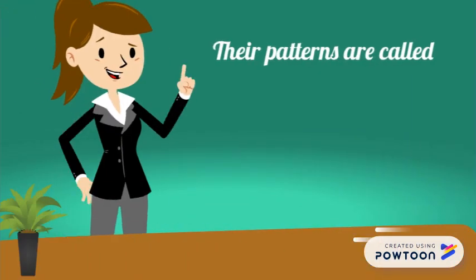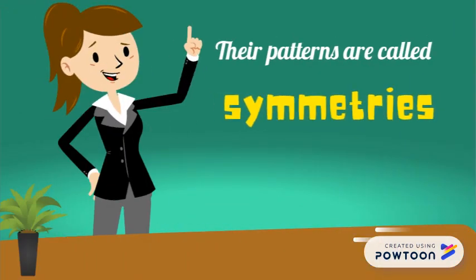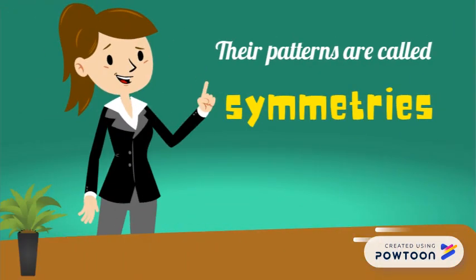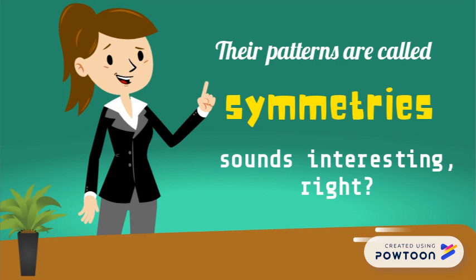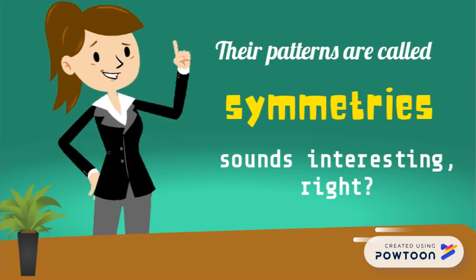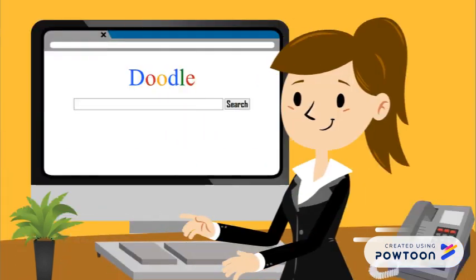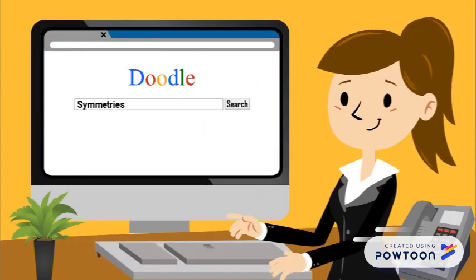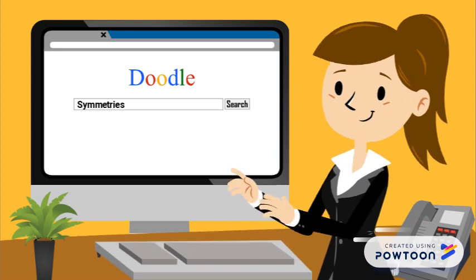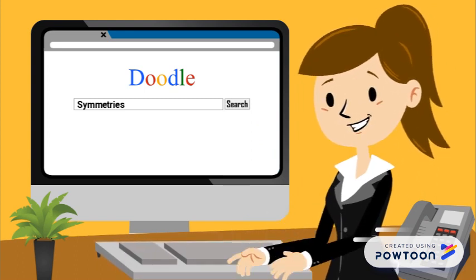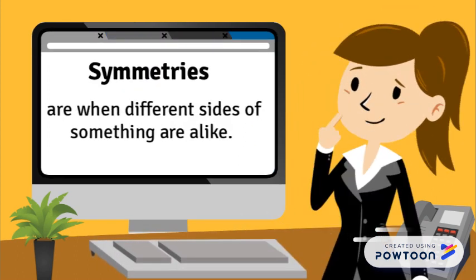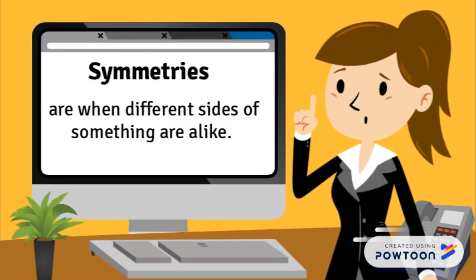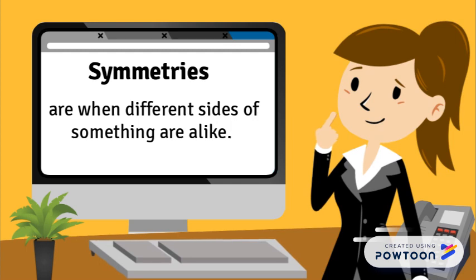Their patterns are called symmetries. Sounds interesting, right? Symmetries are when different sides of something are alike.